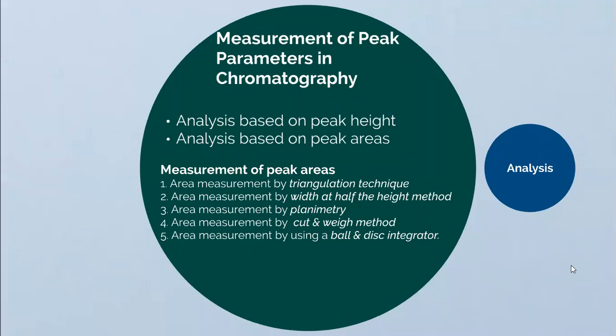Measurement of peak parameters in chromatography: various methods are used to measure different parameters for the separated compounds in the chromatogram. Broadly, these are analysis based on peak height and analysis based on peak areas. For the measurement of peak areas, there are five methods: area measurement by triangulation technique, area measurement by width at half the height method, area measurement by planimetry, area measurement by cut and weigh method, and area measurement by using a ball and disc integrator.